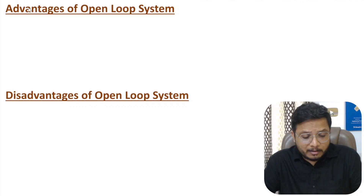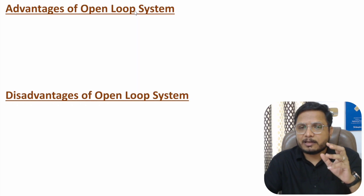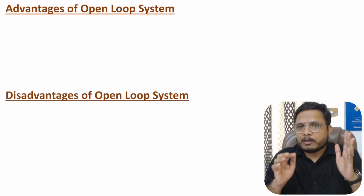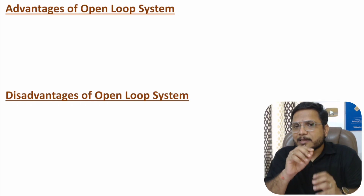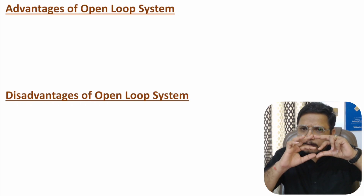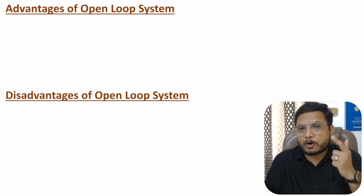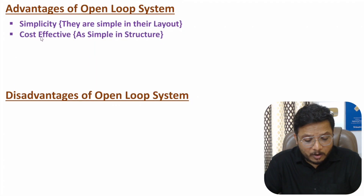Regarding advantages of open loop systems, one should know that open loop systems are simple in structure, because there is no feedback — input is given to the controller and the controller gives the controlled signal to the plant. That is how the simple layout works. That's why open loop systems are also cost effective.